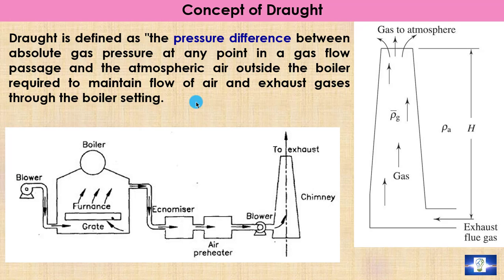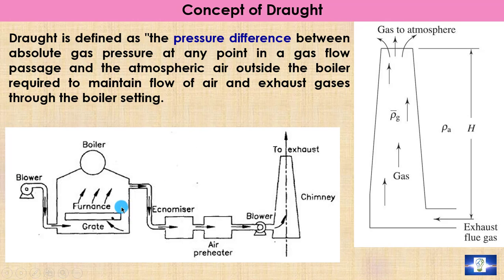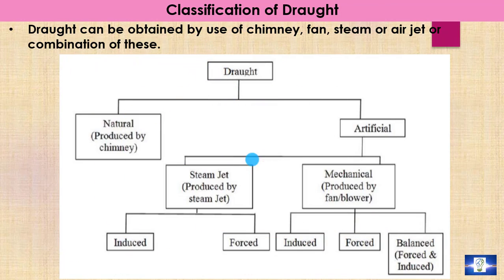Draft is basically the pressure difference. We know that gas flows from the high pressure zone to the low pressure zone. In the case of a boiler system, this pressure difference is caused by the use of a chimney or the use of blowers or fans. In the case of a chimney, the pressure difference is caused by the difference in density of air and gases. So draft is defined as the pressure difference between the absolute gas pressure at any point in a gas flow passage and the atmospheric air outside the boiler, required to maintain flow of air and exhaust gases through the boiler setting.